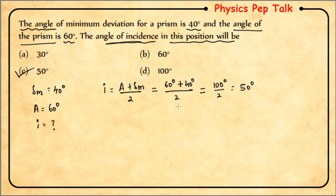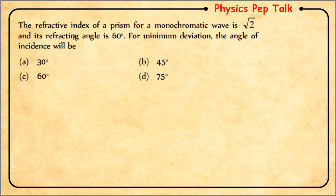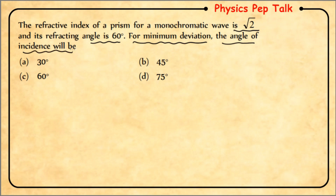Next question: the refractive index of a prism for a monochromatic wave is √2 and its refracting angle is 60°. For minimum deviation, the angle of incidence will be? Given: refractive index μ = √2, refracting angle A = 60°.